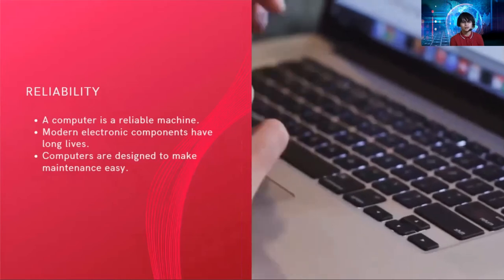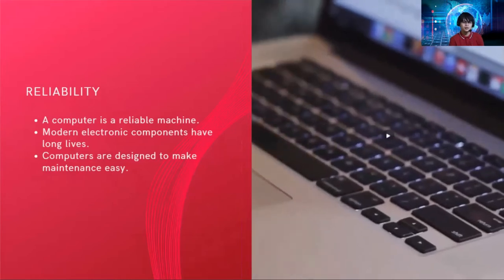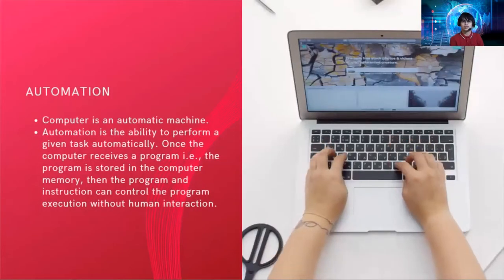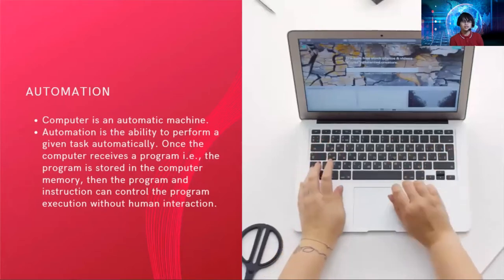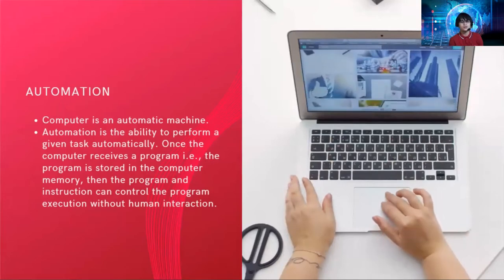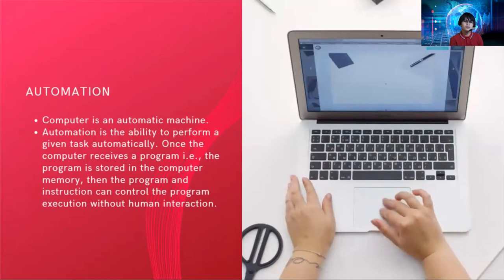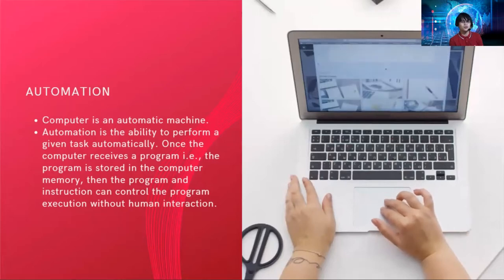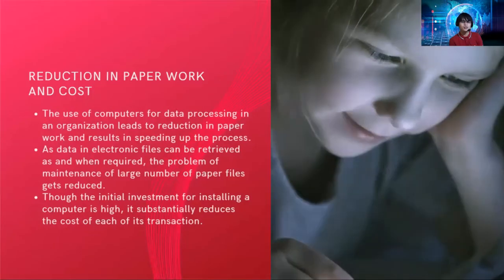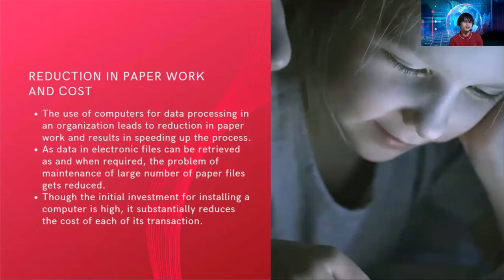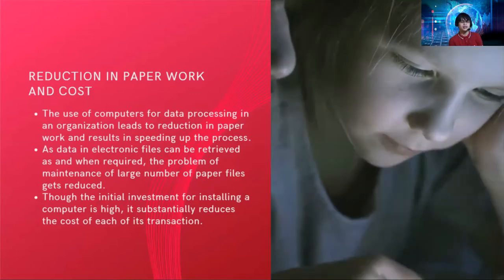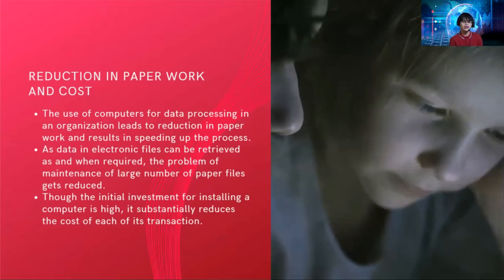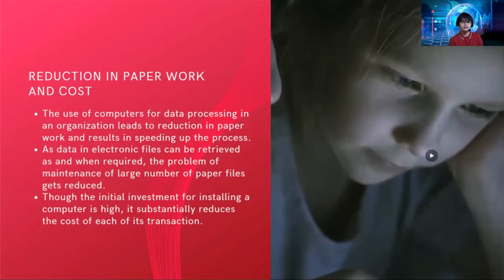Next is reliability. A computer is a reliable machine — modern electronic components have long lives and computers are designed to make maintenance easy. Next is automation. A computer is an automatic machine; automation is the ability to perform a given task automatically. Once the computer receives a program, the program starts in the computer memory and the instructions can control program execution without human interaction. Next is reduction in paperwork — through computers, paperwork and cost will be reduced. The use of computers for data processing leads to reduction in paperwork and speeds up the process, as data in electronic files can be retrieved as required.